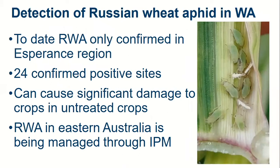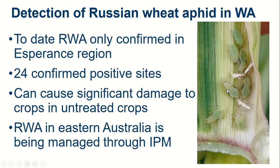We have only found Russian wheat aphid in the Esperance port zone. It's been confirmed at 24 sites, meaning a photograph has been taken and identified by the taxonomists. The Russian wheat aphid is different to all other aphid species in our cereals — different from the corn and the oat aphid — and we expect anyone who works in agriculture should be able to identify it using a hand lens. At the moment you can see these aphids have little black wing buds, and we do have aphids on the wing in Esperance, so we expect movement into other parts of our landscape.